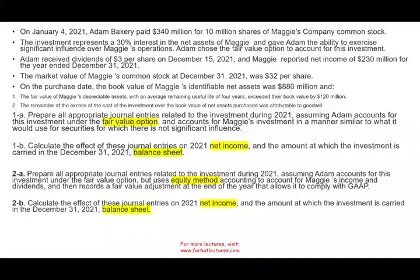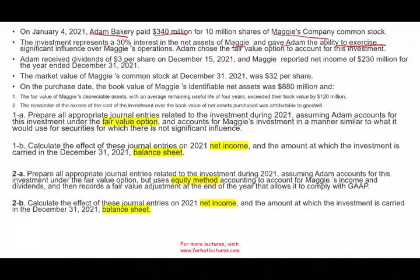On January 4th, Adam Bakery paid $340 million for 10 million shares of Maggie's common stock. Adam bought 30% of Maggie's investment, representing 30% of the net assets, and Maggie gave Adam the ability to exercise significant influence. This means if they want to use the equity method, they have significant influence.